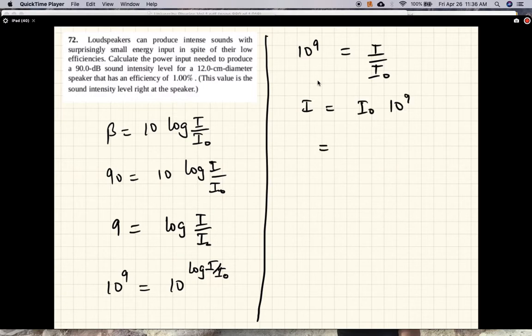And I₀, the threshold of hearing, is 10⁻¹² watts per meter squared times 10⁹ is 10⁻³ watts per meter squared. Okay, so this is the intensity that the speaker needs to produce.